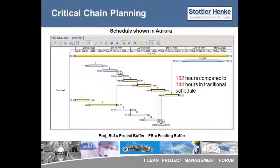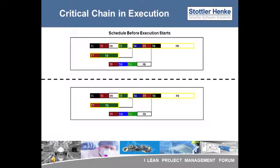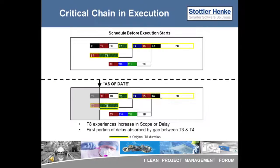Now we move on to how critical chain operates in execution. We expect things to not go as planned. As the project progresses, both tasks T1 and T7 essentially finish on time. After task T8 has been worked on for a time, an update is provided that estimates the remaining duration, showing an end time for T8 that is later than the original aggressive estimate. In this case, the delay is absorbed by the gap that existed between T3 and T4.